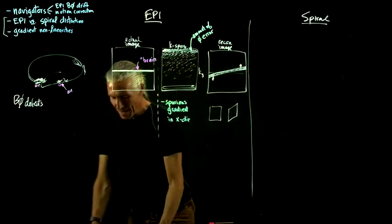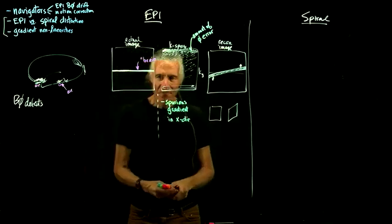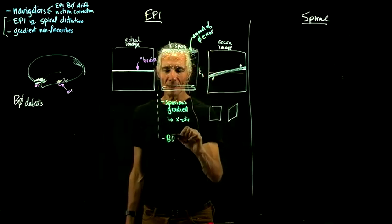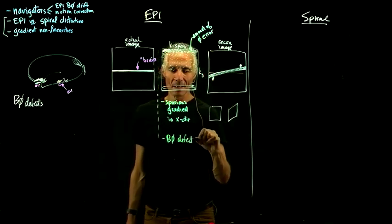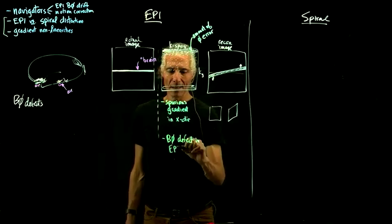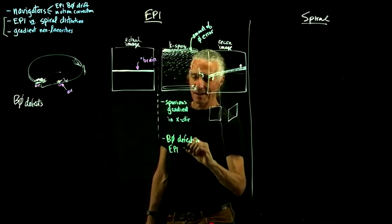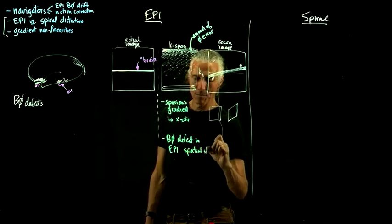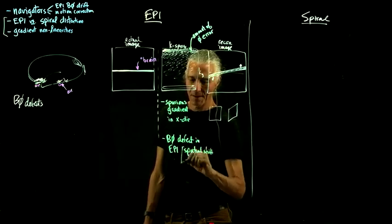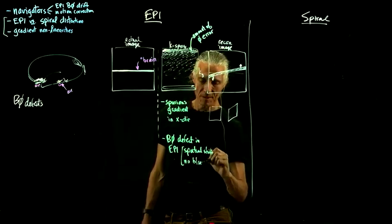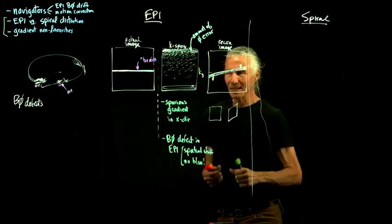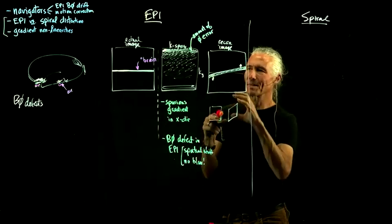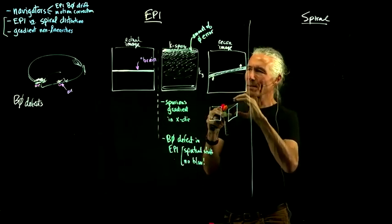Given that phase error builds up over time, when you go back and do your inverse Fourier transform to get your image, what will happen is it will cause your brain to turn into a kind of trapezoid. So here's your brain — it'll tilt it. Why? If you had a spurious X gradient that wasn't supposed to be there, it's going to increase the phase on the right side of the image and decrease it on the left side. That will actually cause this part of the image to move up and this part to move down — turning your brain into a kind of trapezoid. That's a non-rigid movement.